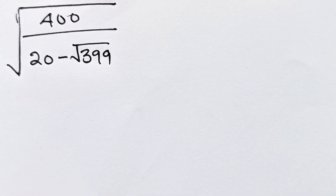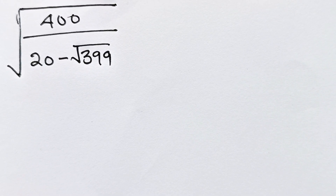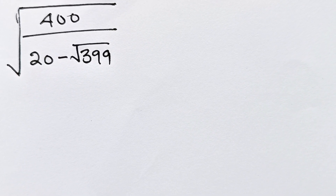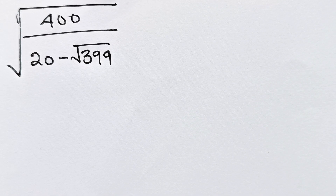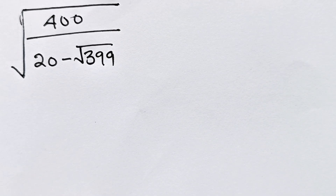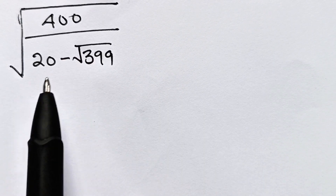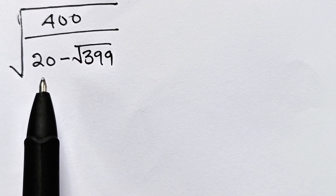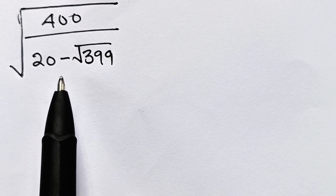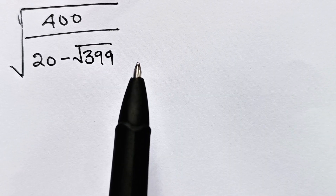Hi everyone, we have an algebra square root question to solve. We are asked to simplify the square root of 400 divided by 20 minus square root of 399.